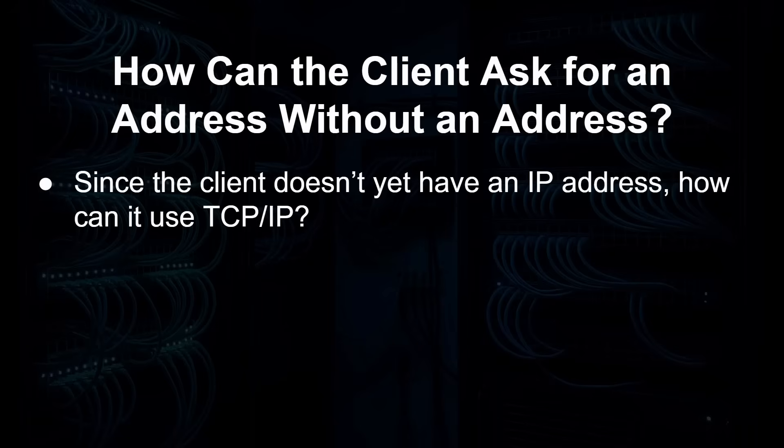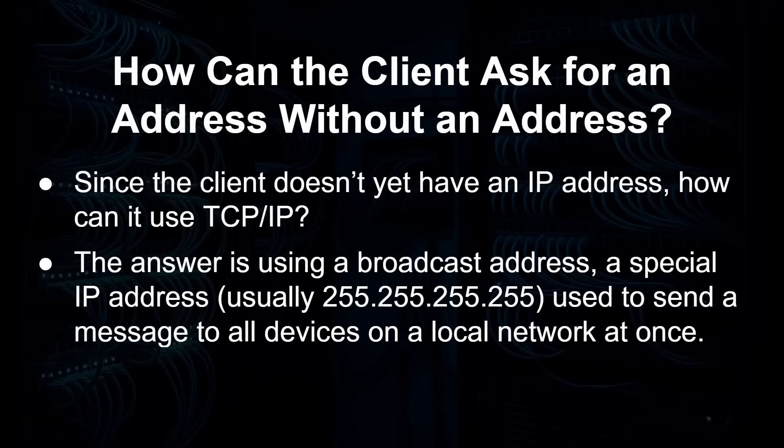Since the client doesn't yet have an IP address, it uses a broadcast address — normally 255.255.255.255 — that sends the message to everyone on the network. It gets broadcast only on your LAN; it's not going out onto the internet because your router won't pass it out. It stays inside your house or office. Every device receives it, but other PCs and laptops just ignore it. It finally reaches your router, which recognizes it and responds because it's also a DHCP server.